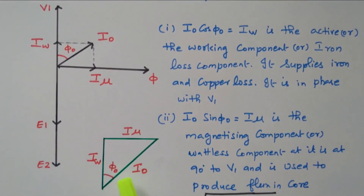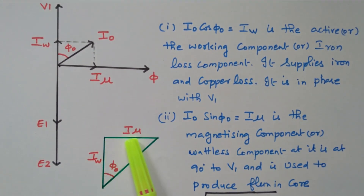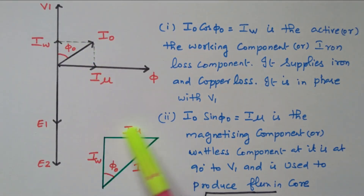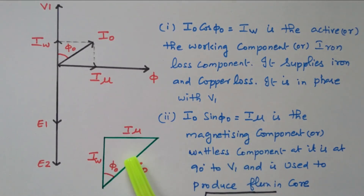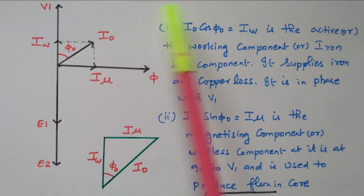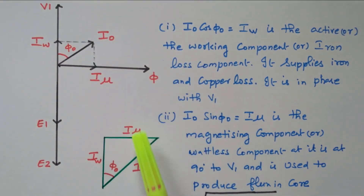This triangle is drawn separately. I0 is the hypotenuse; the horizontal component is the magnetizing current Imu, and the vertical component is the working current Iw — this is the total current in the primary winding. From the triangle: sin(phi0) = Imu / I0, so I0·sin(phi0) = Imu. Similarly, cos(phi0) = Iw / I0, so I0·cos(phi0) = Iw. These are the two components — working component and magnetizing component.